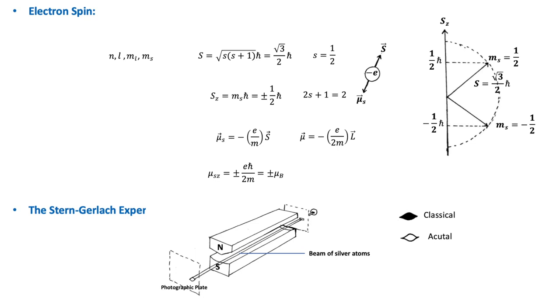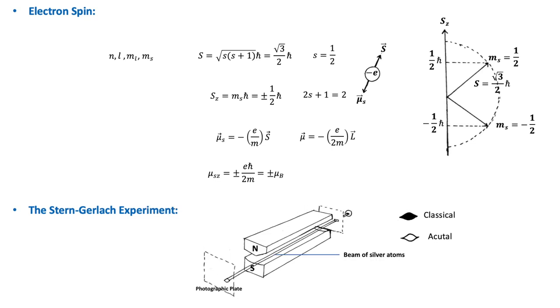After the electron spin was introduced into the theory of the atom, there are now four quantum numbers, n, l, ml, and ms, that are needed to specify the state of an electron in an atom. Thank you for watching, please don't forget to like and subscribe and see you in the next video.